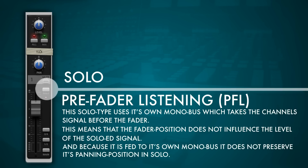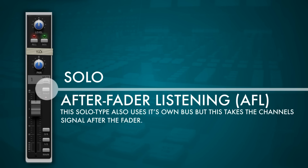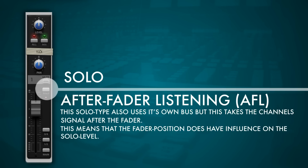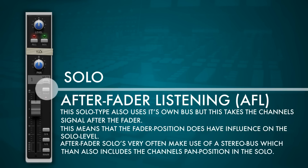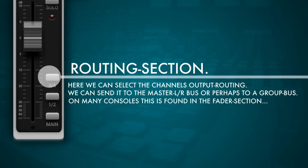Pre-fader listening (PFL) is a type of solo that uses a separate mono bus with its own monitor level. This solo is taken before the fader, so the fader position does not affect the solo level. The third type is after-fader listening (AFL), which also feeds its own solo bus and is therefore non-destructive, but since it's after the fader we can judge the level as it's placed in the mix.